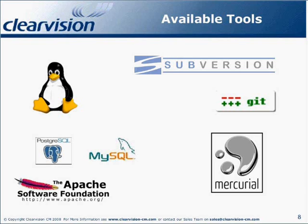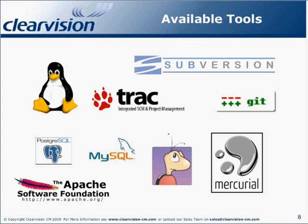For change management, there is Bugzilla, which is a defect tracking system that allows individuals, groups, or developers to keep track of outstanding bugs in their products. There is also Trac, a web-based software project management and bug and issue tracking system that provides an interface to Subversion and has an integrated wiki. Simple Ticket is the first Ruby on Rails-based trouble ticket system, built as an alternative to more expensive systems such as Remedy and Heat. BugTracker.net is a web-based bug tracker and customer support issue tracker written using ASP.NET, C#, and Microsoft SQL Server or its free cousin SQL Server Express.